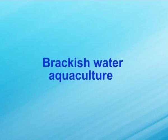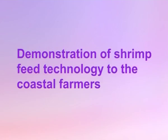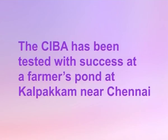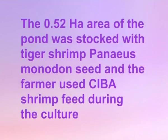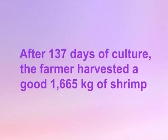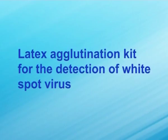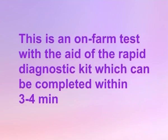Brackish water aquaculture — demonstration of shrimp feed technology to coastal farmers: shrimp feed developed by CIBA has been tested successfully at a farmer's pond in Kalpakkam near Chennai. The 0.52 hectare pond was stocked with tiger shrimp (Penaeus monodon) seed, and the farmer used CIBA shrimp feed during the culture. After 137 days of culture, the farmer harvested 1,665 kg of shrimp. A latex agglutination kit for the detection of white spot virus in shrimps has been developed — an on-farm rapid diagnostic test completable within 3 to 4 minutes.